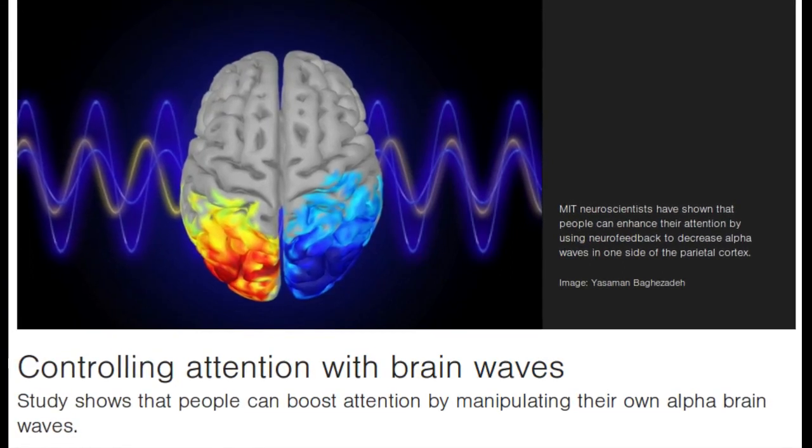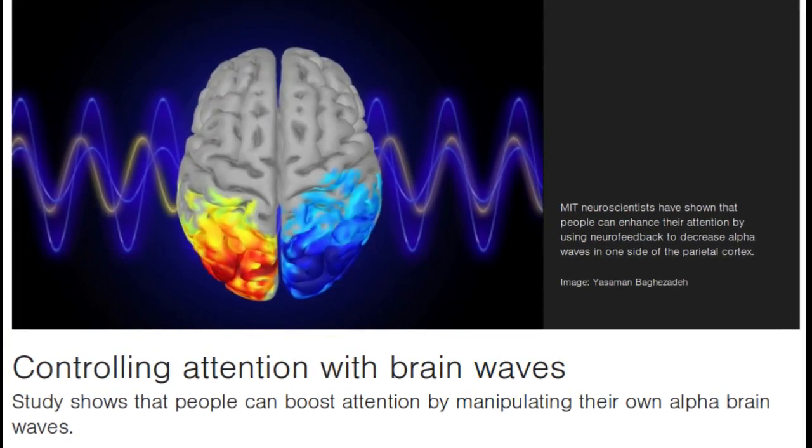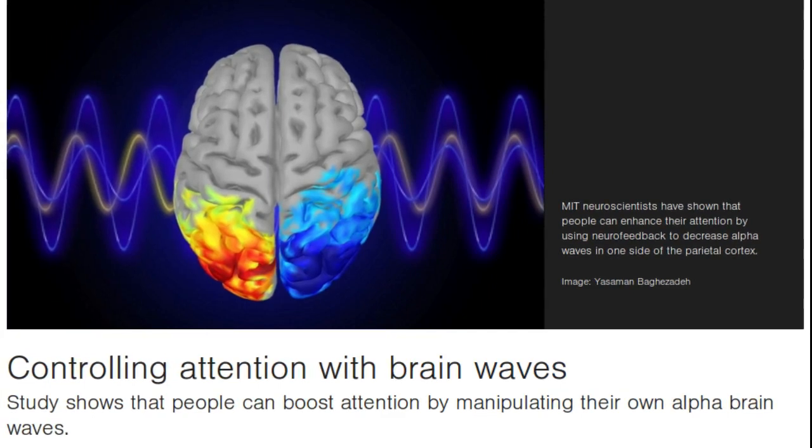In a new study, MIT researchers found that people can enhance their attention by controlling their own alpha brainwaves based on neurofeedback they receive as they perform a particular task.